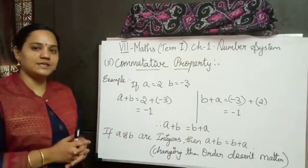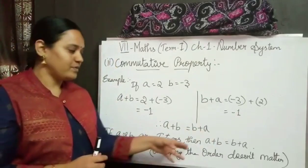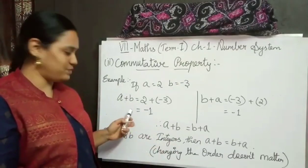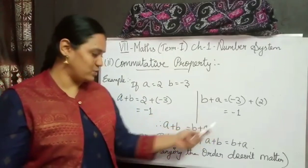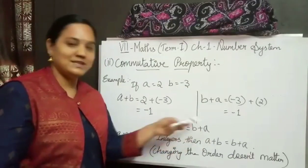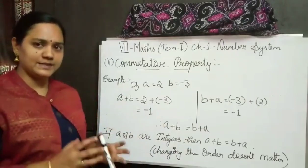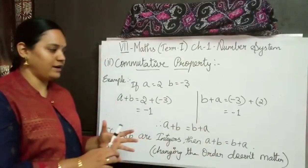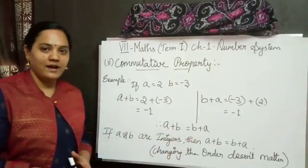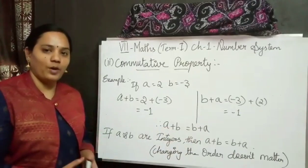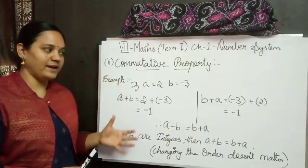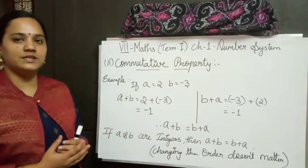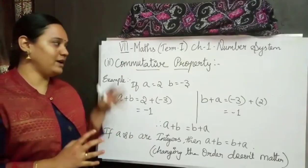The commutative property says: if a and b are integers then a plus b is equal to b plus a. The value of a plus b is minus 1, and the value of b plus a is also minus 1, so we can say that a plus b is equal to b plus a. That is our commutative property. By finalizing this, we can say that changing the order does not matter — if while adding you are changing the order, there should not be any changes in the value.